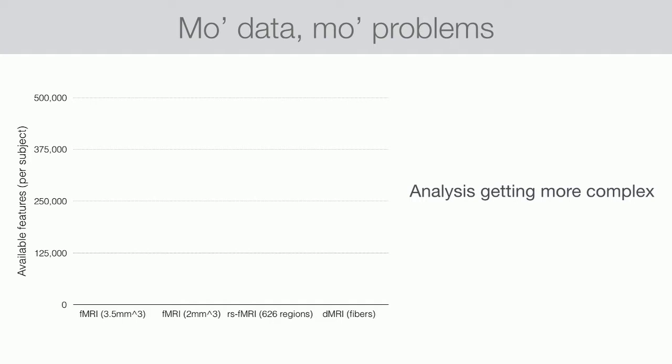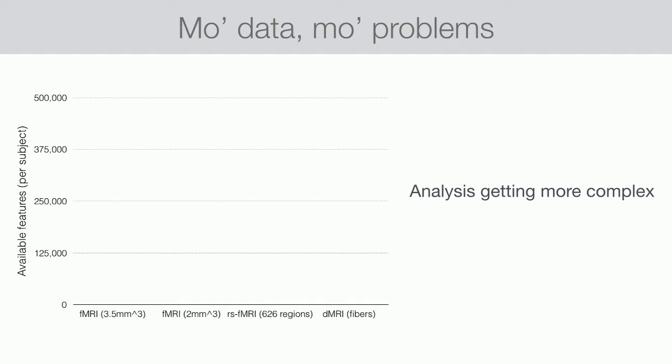We're getting larger physical data files, we're running more subjects, and on top of all this, our analyses are getting more complex. When I started in fMRI in 2001, our average voxel size was about 3.5 millimeters, meaning we had about 20,000 analyzable units in the brain. As we improved spatial resolution with multiband imaging, that number goes up to about 125,000 analyzable units per brain per subject.